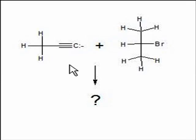In this example we consider the reaction of an alkyne salt with a secondary alkyl halide. Now it's tempting here to treat the alkyne salt as a nucleophile and attempt to do an SN2 reaction on the central carbon.